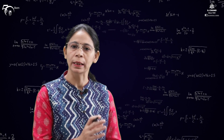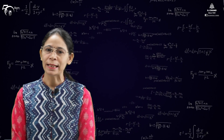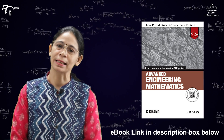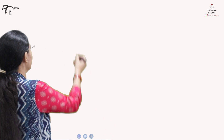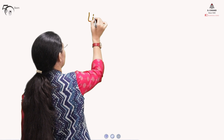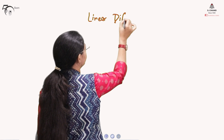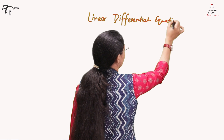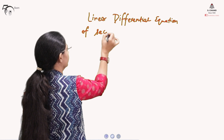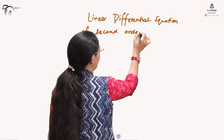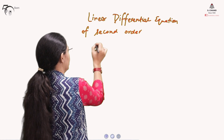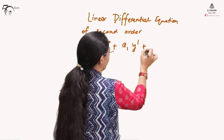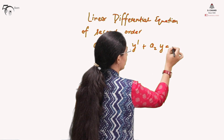Here we are concerned about only the order of the differential equation. The degree has to be 1 only. For more detail, you can refer to the book from S.C.A.N. Publishing, details of which are given on this side and a link is given in the description box. The general form of a linear differential equation of second order can be written as: A0 times y double-prime plus A1 times y prime plus A2 times y equals R(x).